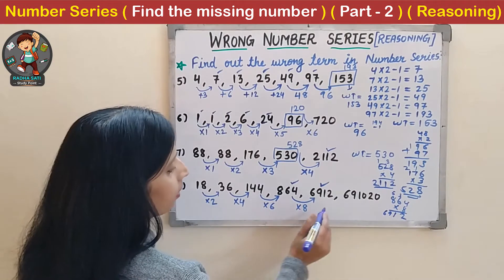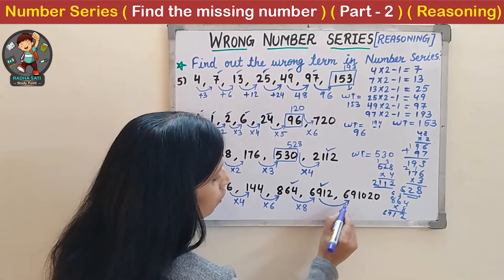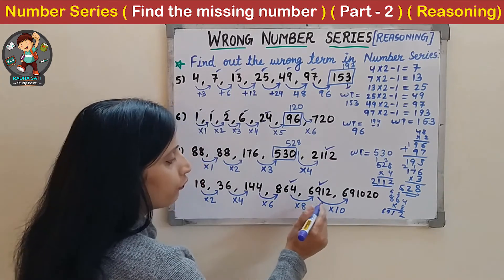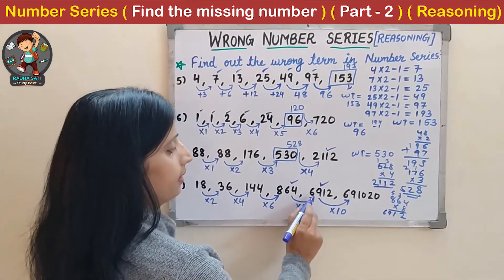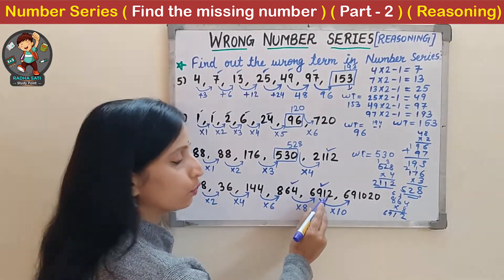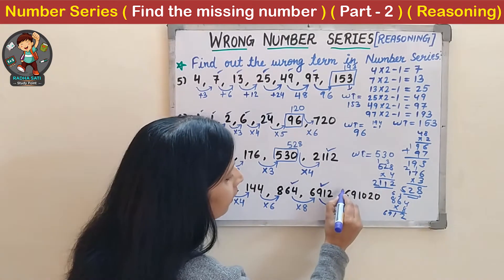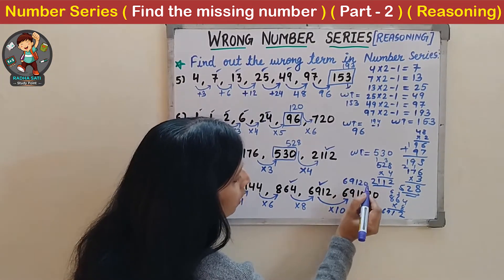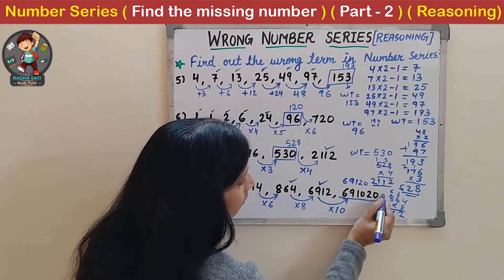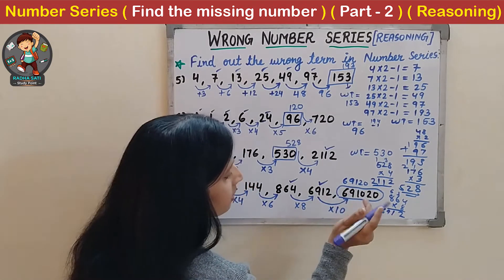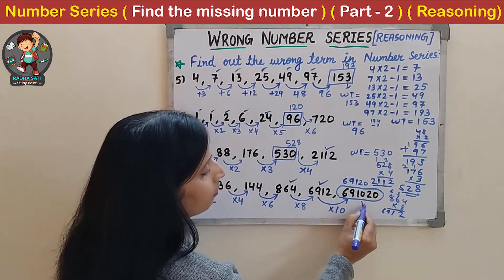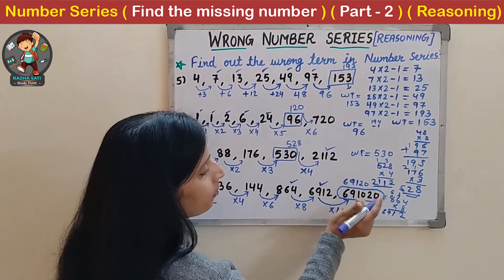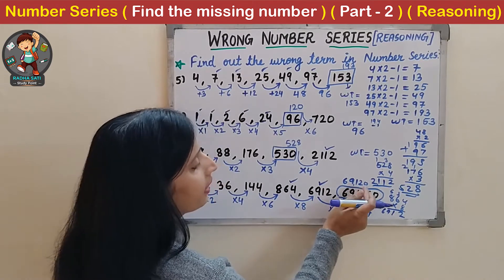If we multiply 6,912 by 10 we get 69,120. So this term in the number series is the wrong term. Instead of the number given, the number should be 69,120.